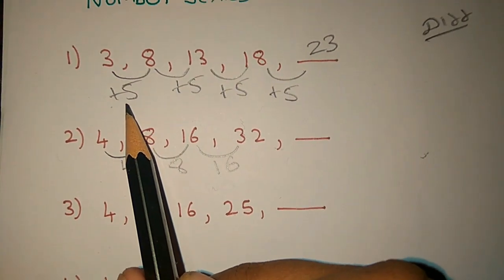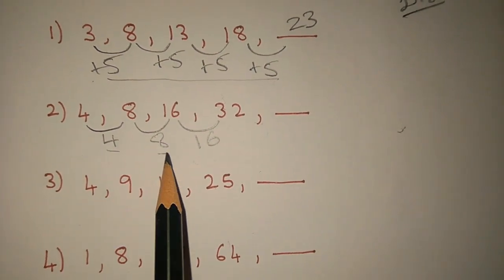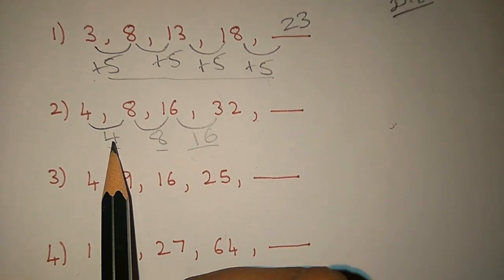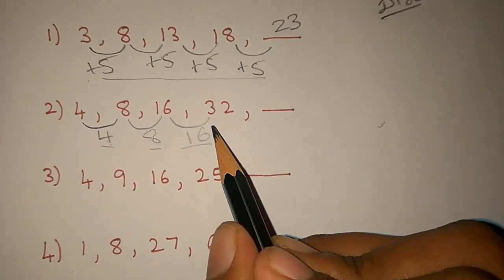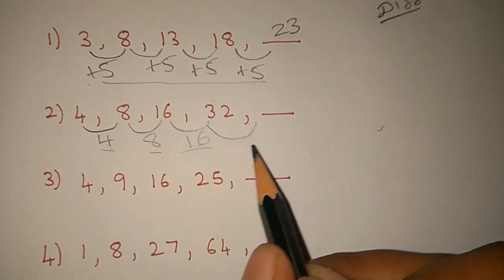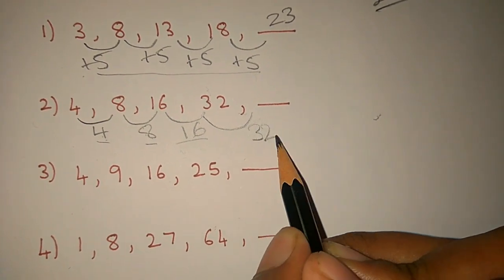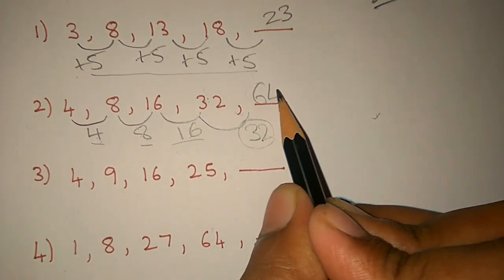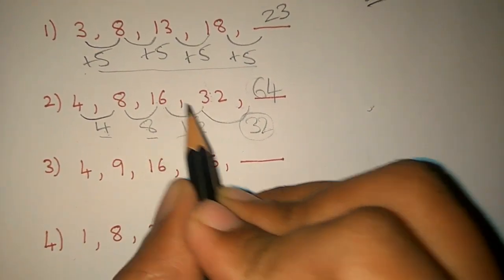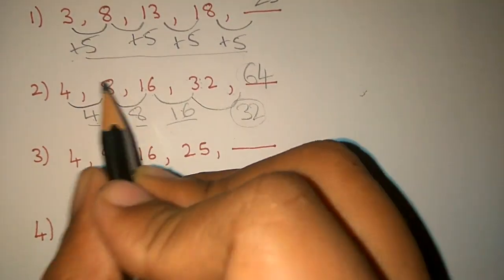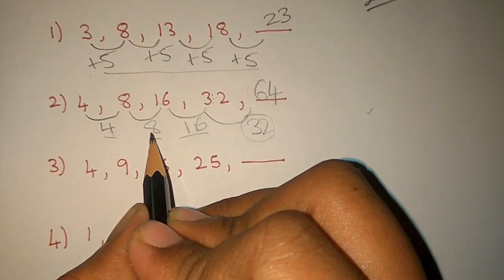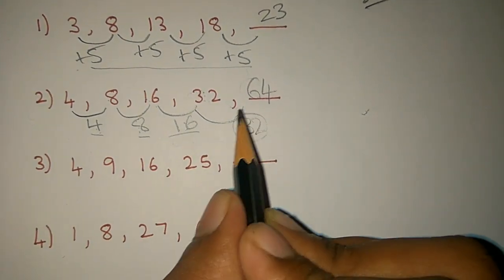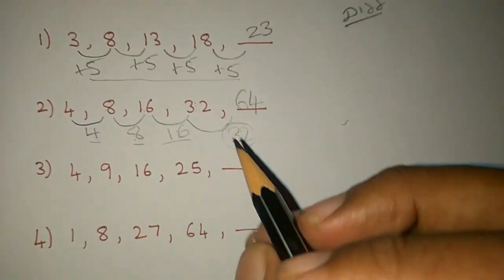The difference is not constant — we call it 4, 8, 16. The solution is: 4 × 2 is 8, 8 × 2 is 16, so the next difference is 16 × 2 = 32. If you add 32, that gives the next term. So the pattern is 4, 8, 16, and next is 64.